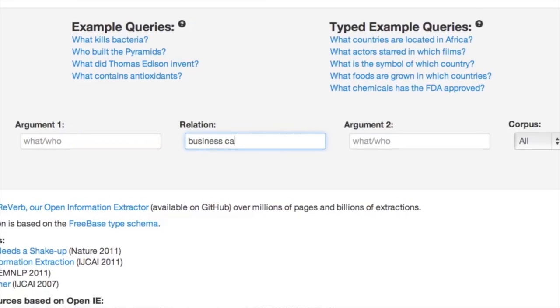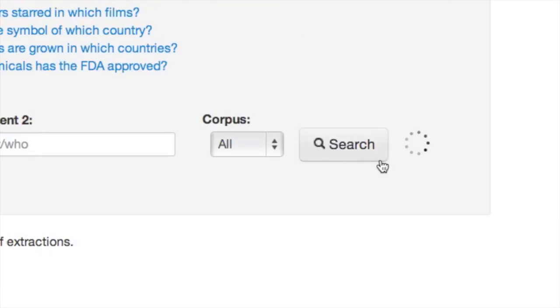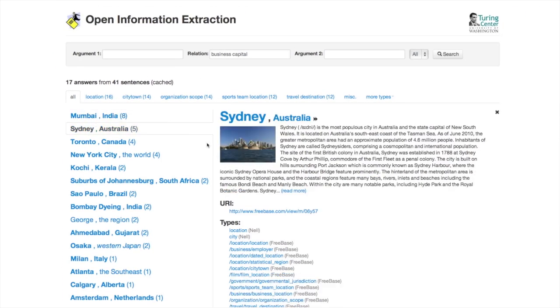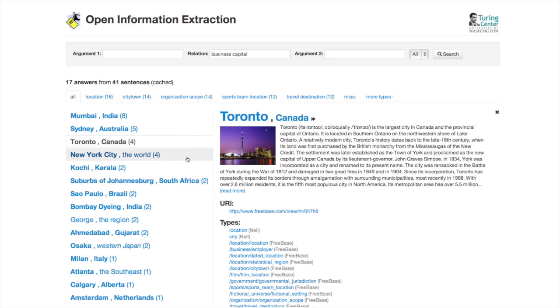Let me give you an example of what cities are business capitals. So here you can see that we get Mumbai is the business capital of India, Sydney is the business capital of Australia, Toronto, Canada, New York City, the world, and so on.